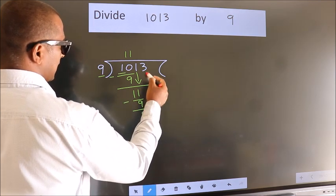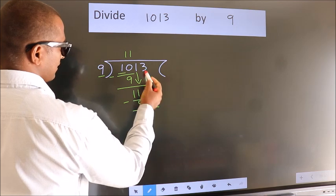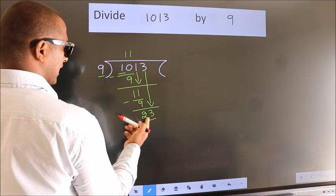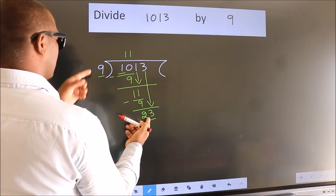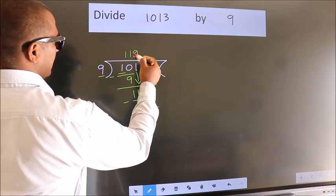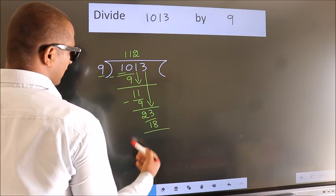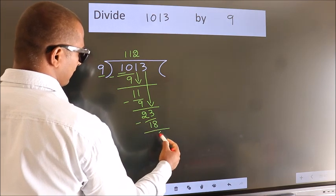After this, bring down the beside number. So 3 down. So 23. A number close to 23 in the 9 table is 9 twos, 18. Now we subtract. We get 5.